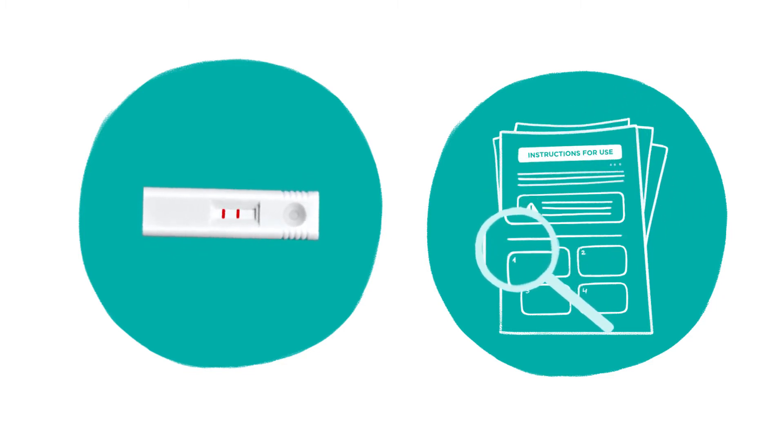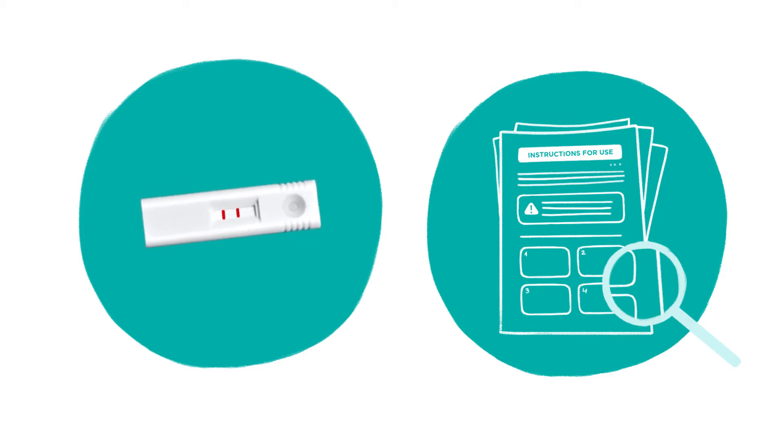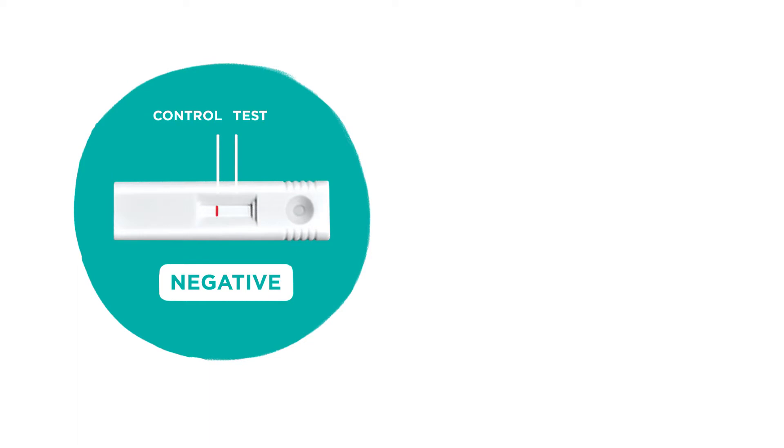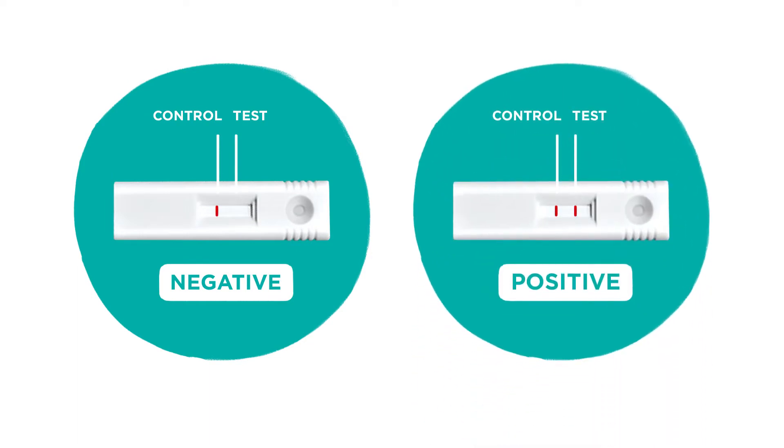This video will walk you through each step and provide a visual cue on how to perform the iStatus COVID-19 Antigen Test. The test cartridge will determine your result. The control line and or the test line will appear at the end of the test.